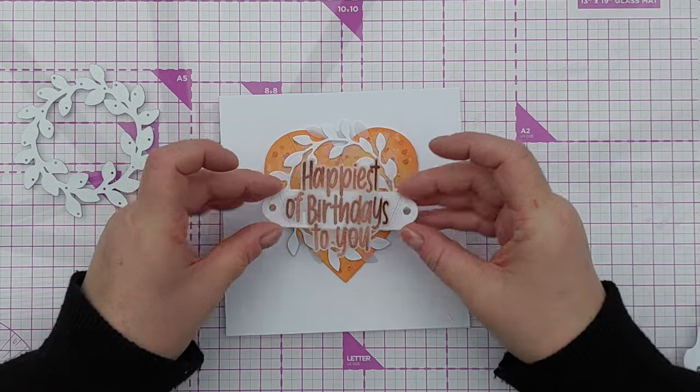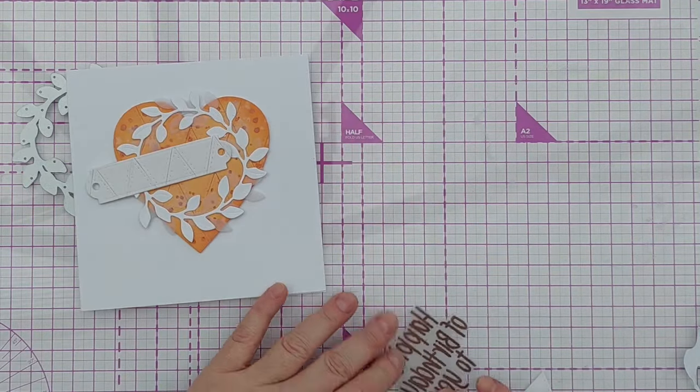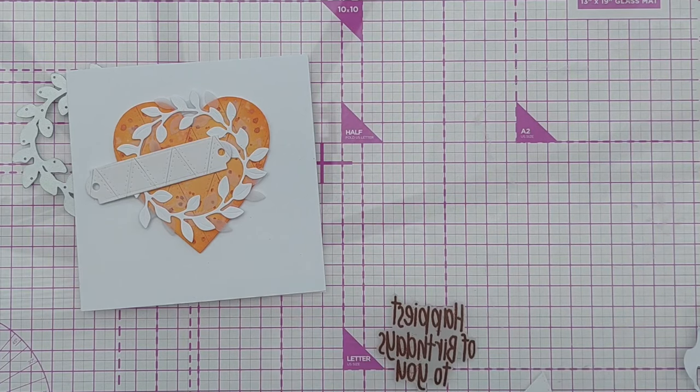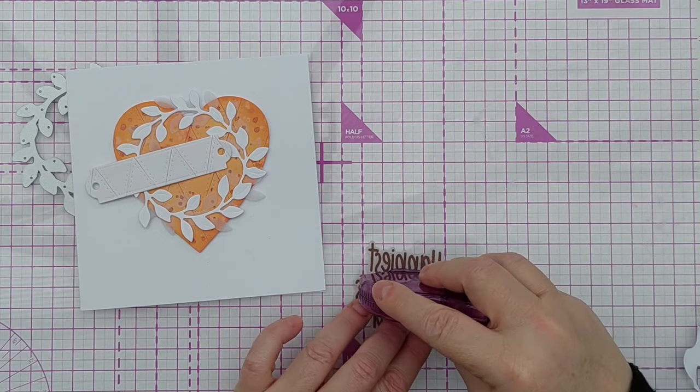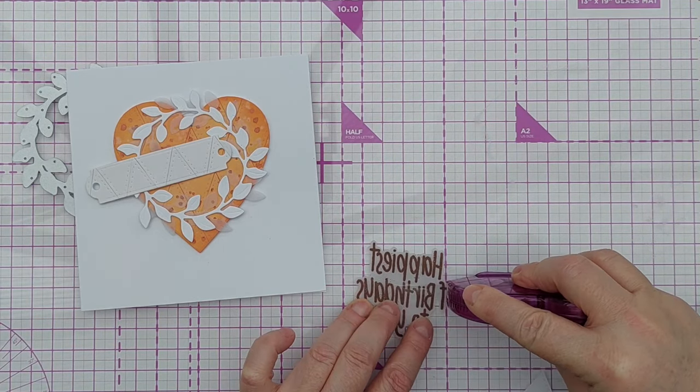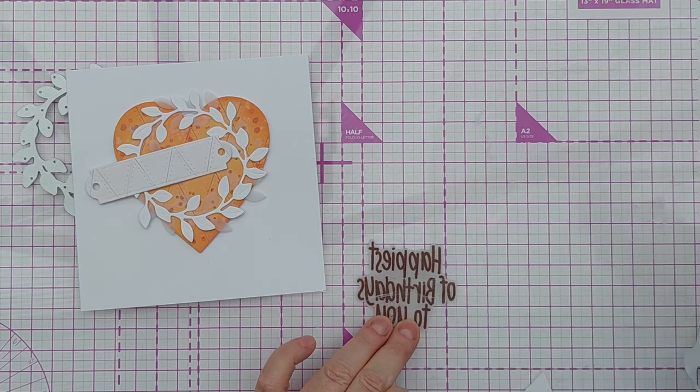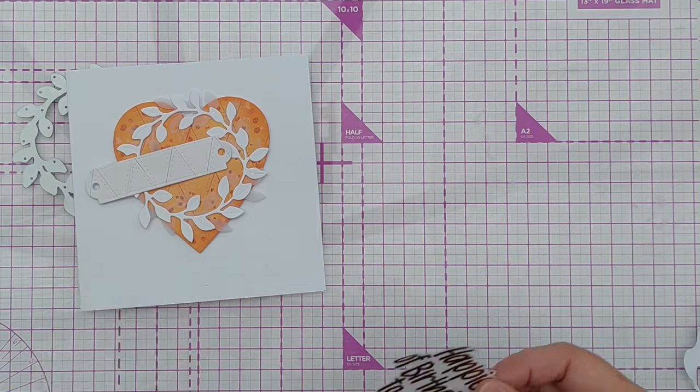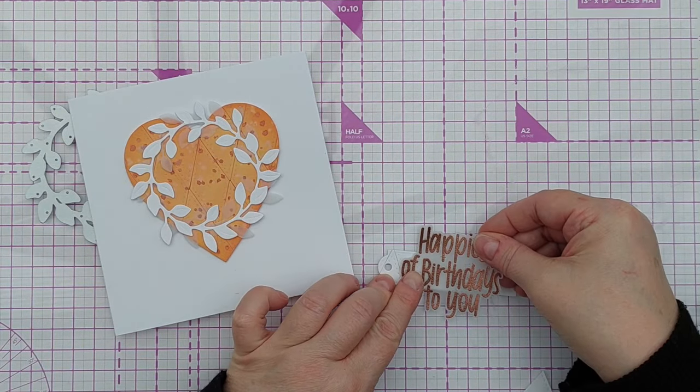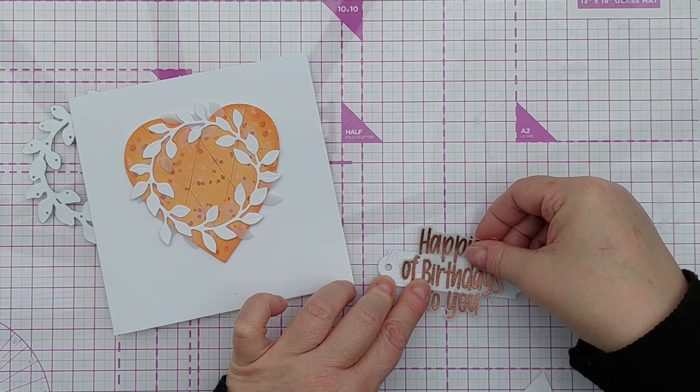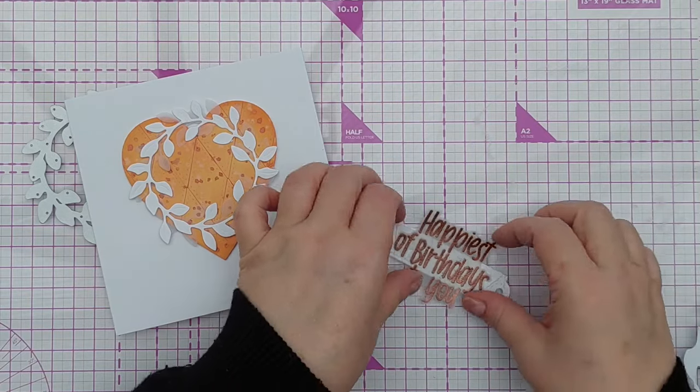So I'm going to use this Crafters Companion tape runner, and it is quite good as a vellum tape runner. It doesn't show through too much. And I'm just gonna stick that middle bit, the middle of birthdays, centrally on there, and that should work. The vellum's not going to curl too much.